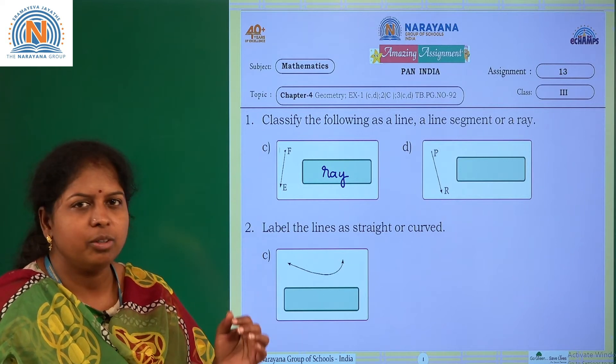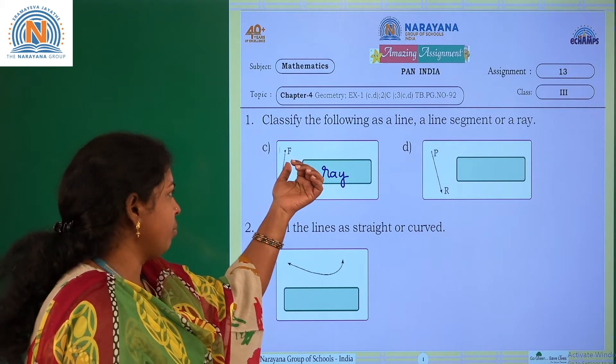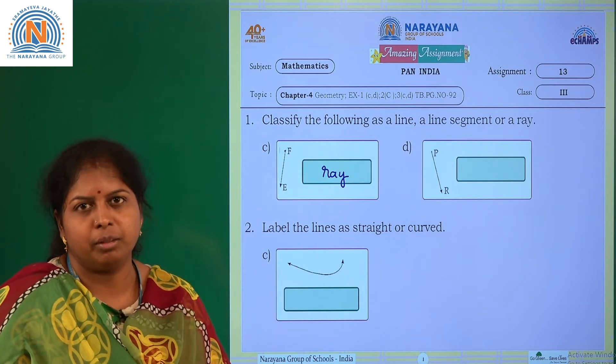So such type of rays - here you are saying that there is an initial point, there is no ending point.